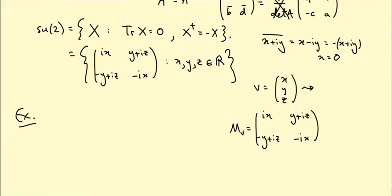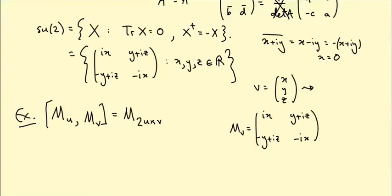So we can think of su(2) as R³ with the Lie bracket essentially being the cross product. One more equation to check (it's a computation): trace(M_u · M_v) = −2(u · v), the dot product of u and v. We'll use both of these equations shortly.